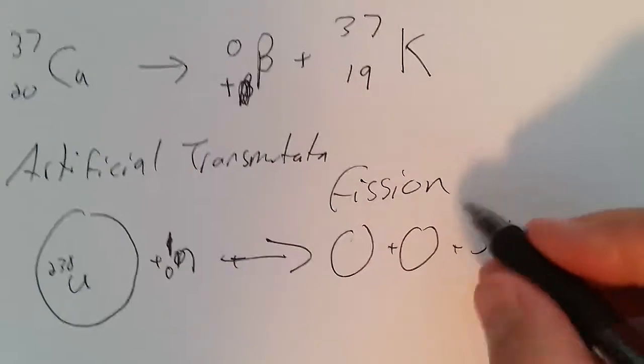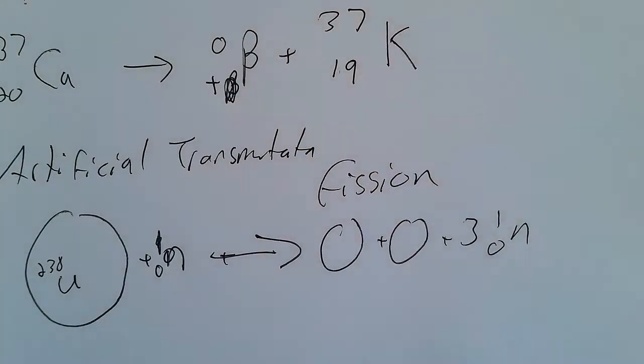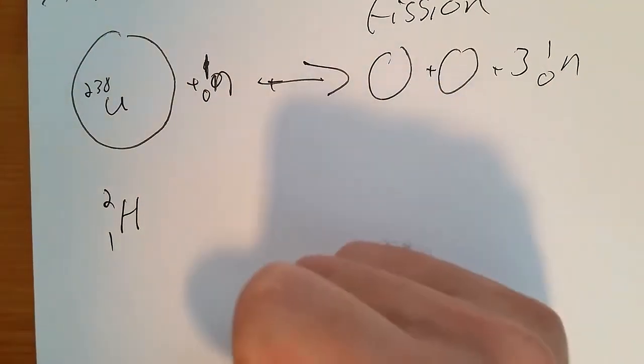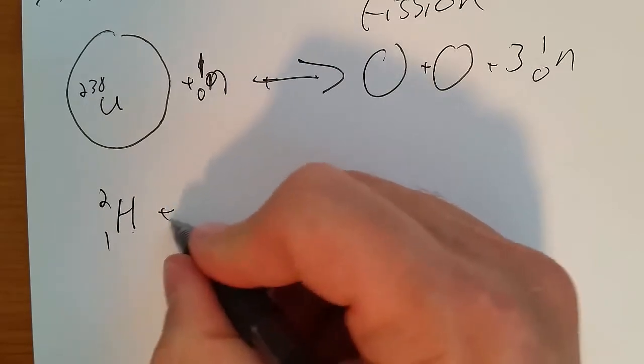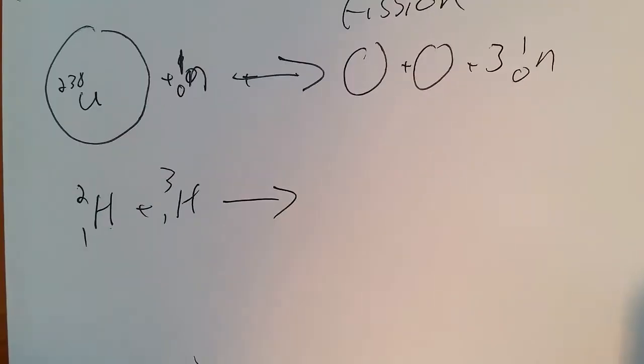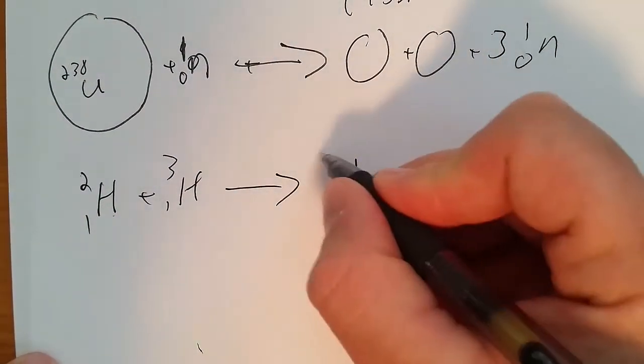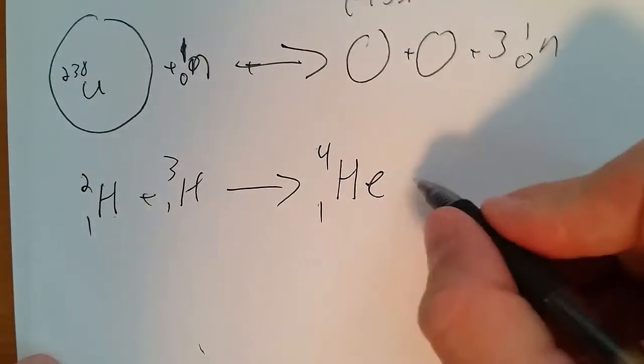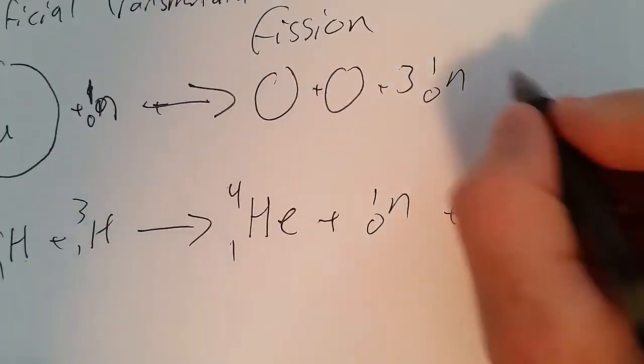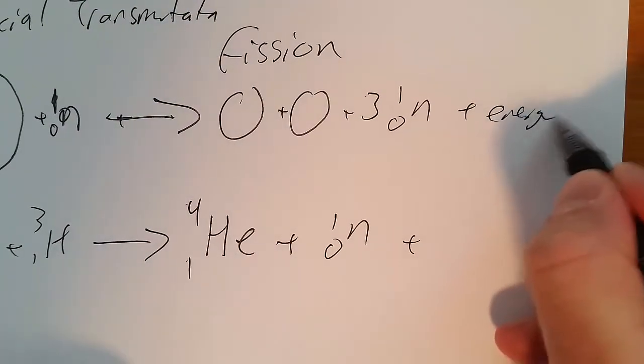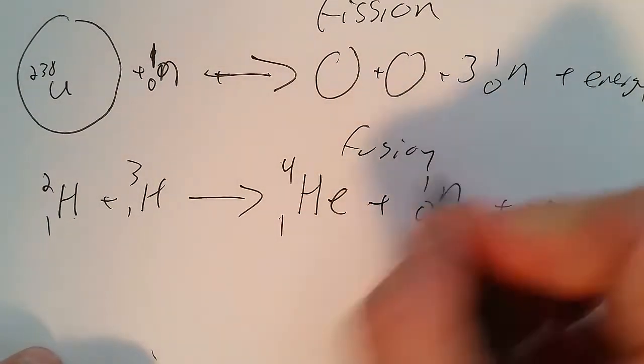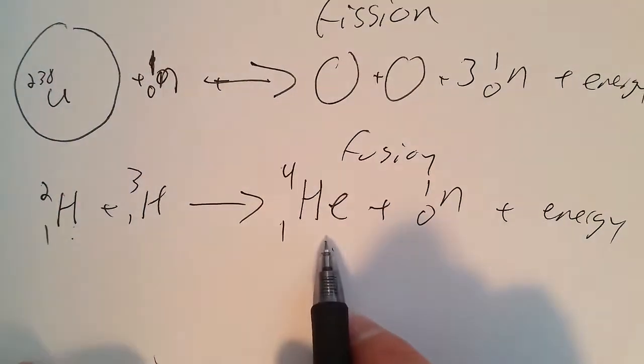When fission happens very quickly, it's a nuclear bomb. When it happens very slowly, it's in a nuclear reactor. In fusion, you have two small things like deuterium (hydrogen-2) and tritium (hydrogen-3), and you jam them together. You'll end up making helium and then a neutron. On both of these, they give off a lot of energy. This is fusion—taking two very small things, putting them together to make something bigger.